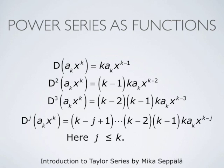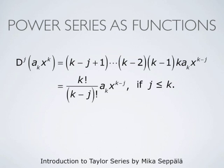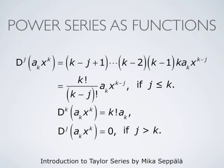If j equals k, then k minus j is 0 and x to the power 0 is 1. So if j equals k, then the jth derivative of ak times x to the power k is just a constant and all subsequent derivatives are 0. The jth derivative of ak times x to the power k can be written as k factorial divided by k minus j factorial times ak times x to the power k minus j, valid if j is at most k. If j equals k, the kth derivative of ak times x to the power k is simply k factorial times ak, and all higher derivatives are 0.